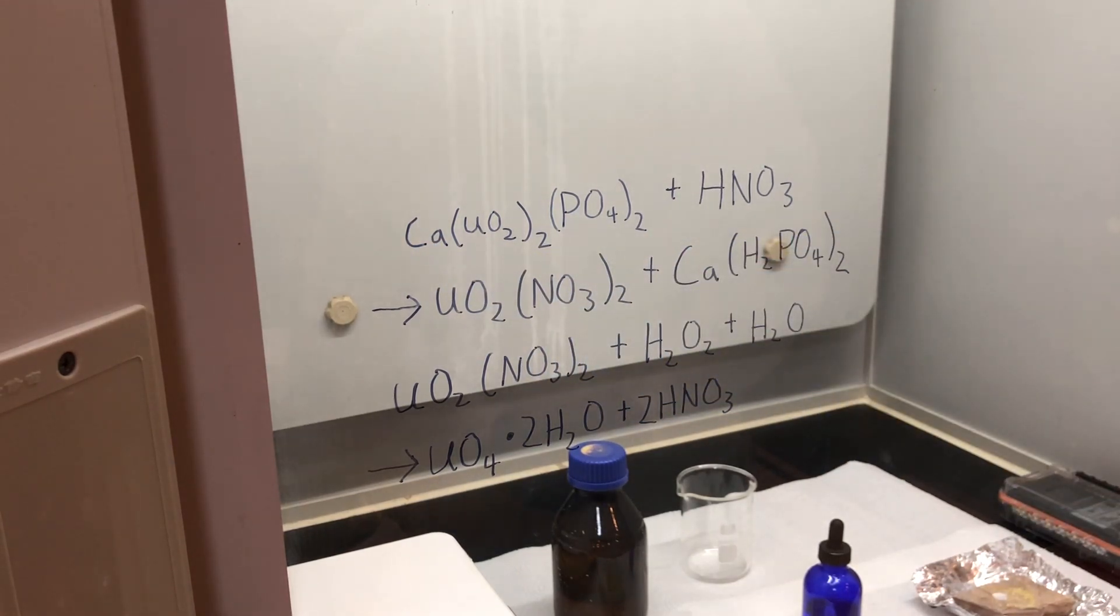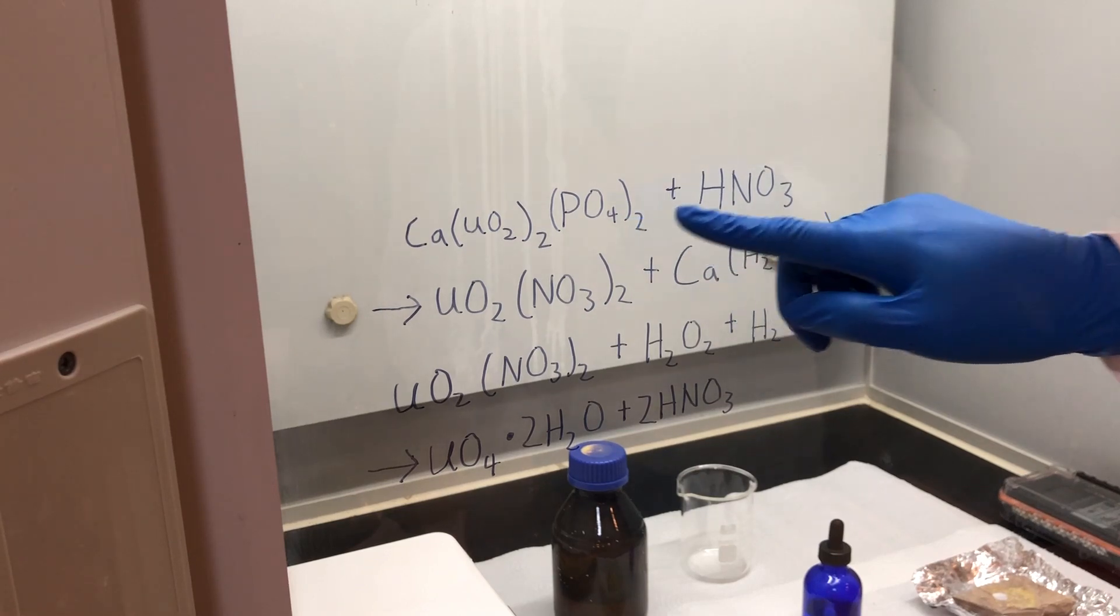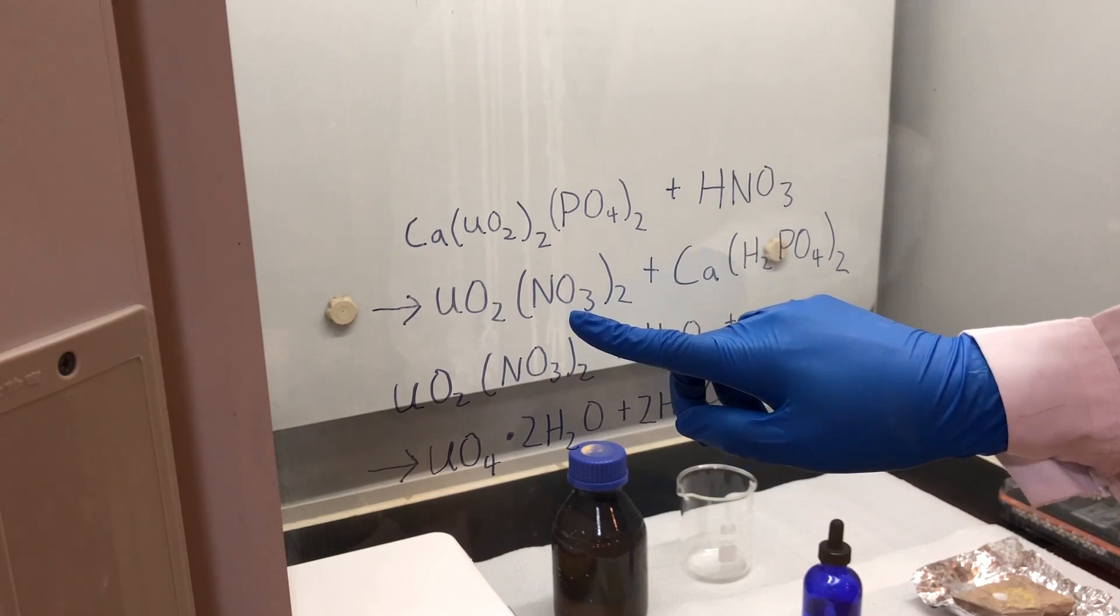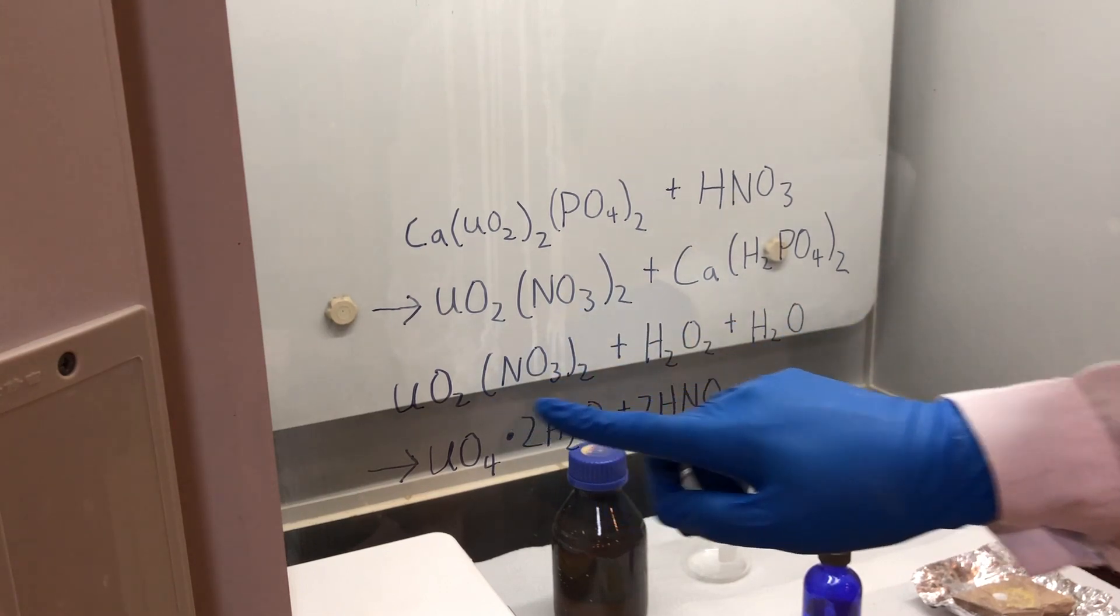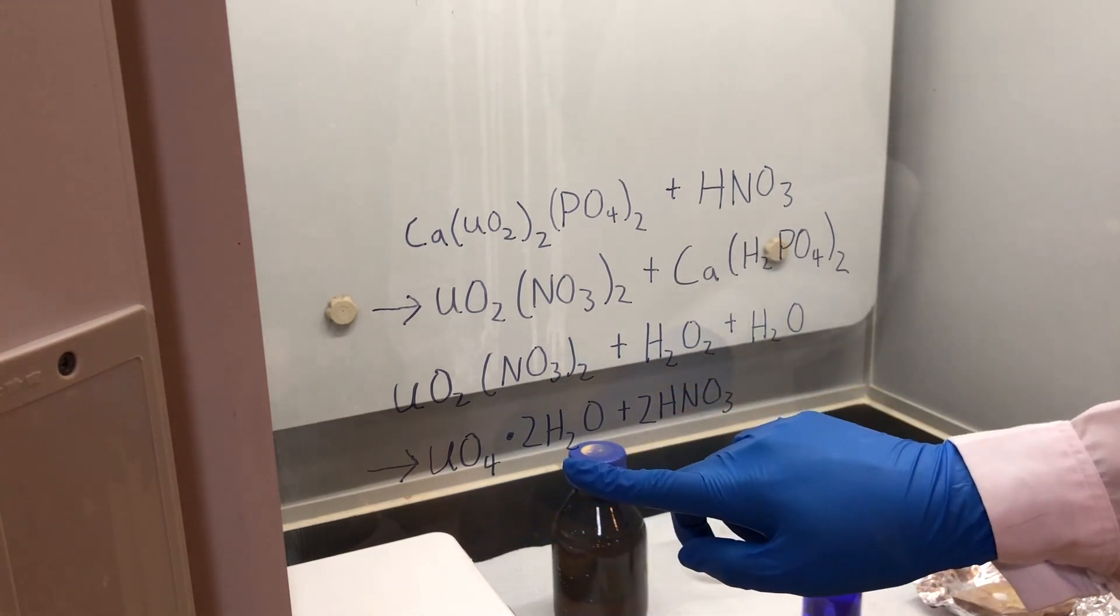However, autonite also contains transition metal impurities, such as iron, cobalt, or nickel, and we will need to be able to separate those out. We will do this by first converting the autonite into a soluble uranium compound by reacting it with nitric acid to form uranium nitrate. Then we'll react the uranium nitrate with hydrogen peroxide to selectively precipitate out the uranium peroxide.